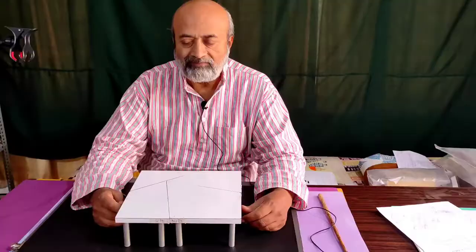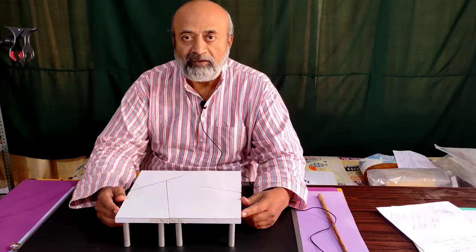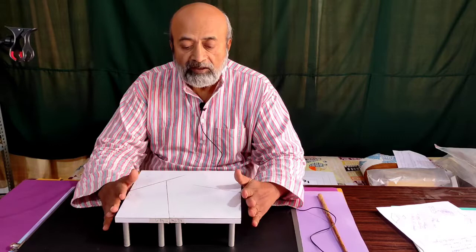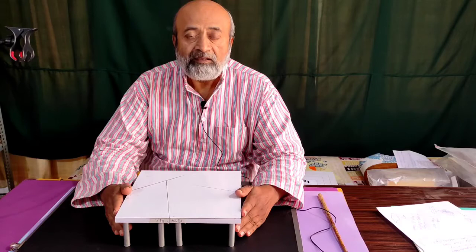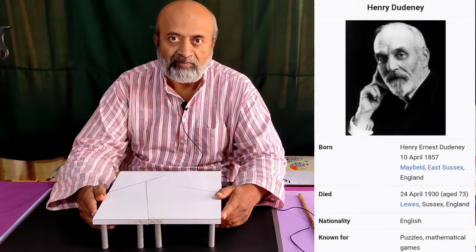This is a small square table — what you see is a mathematical toy. This square is divided into various parts. It has got some kind of history. It was in 1807 that a mathematician called Bolyai — of Lobachevsky and Bolyai fame — who discovered non-Euclidean mathematics, conjectured that one type of polygon can be converted into another polygon of equal area. It was only a conjecture; he could not demonstrate or do anything about it.